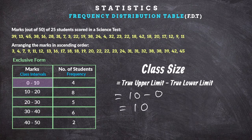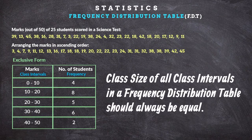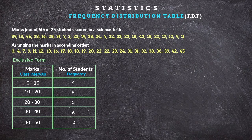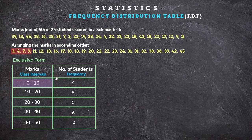For example, this is very important. The class sizes are equal in the frequency distribution table. The number of students is the frequency. In class interval 0 up to 10, you can see the marks in that class interval.